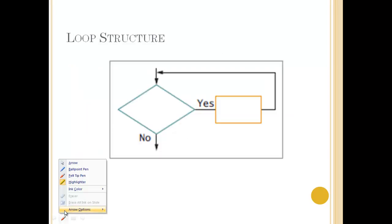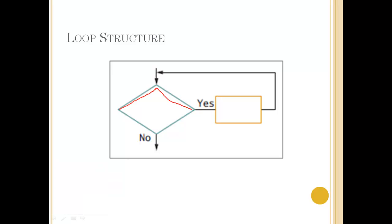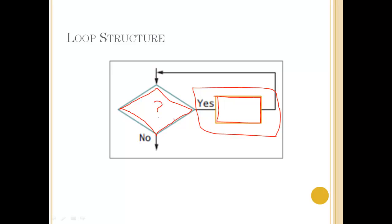The loop structure contains a decision triangle and a process rectangle. The process rectangle is referred to as the body of the loop. If the evaluation of this decision results in a yes, then the body of the loop is performed. If the decision evaluates to no, then the loop ends — we leave the loop structure. The purpose of a loop is to repeat processes if necessary.